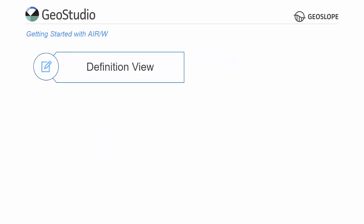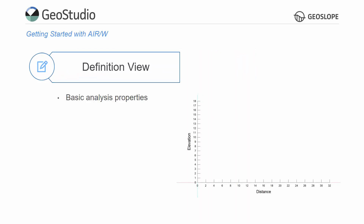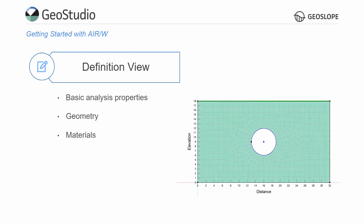The project definition involves selecting the basic analysis properties, drawing the model geometry, creating and assigning material properties, and defining the boundary and initial conditions. Details on the project definition are available in the other Getting Started videos.